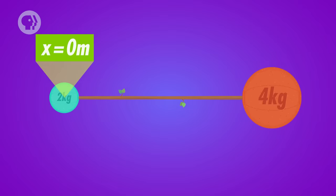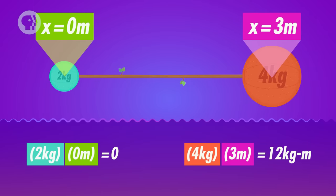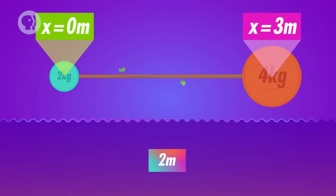Let's try it for our stick with the differently-weighted balls. We'll choose the left side of the stick, where the 2-kilogram ball is, as our starting point. The 2-kilogram ball's mass times its position is zero, the 4-kilogram ball's mass times its position 3 meters is 12-kilogram meters, and the total mass of the system is 6 kilograms. So divide 12-kilogram meters by 6 kilograms and you get 2 meters. That's the position of the center of mass, which is two-thirds of the way along the stick towards the 4-kilogram ball's side. Exactly what we figured out earlier.